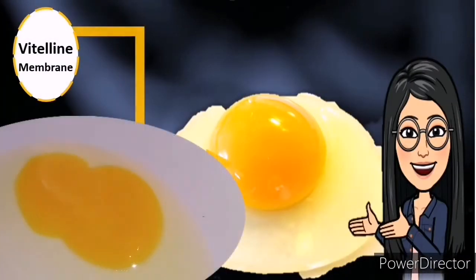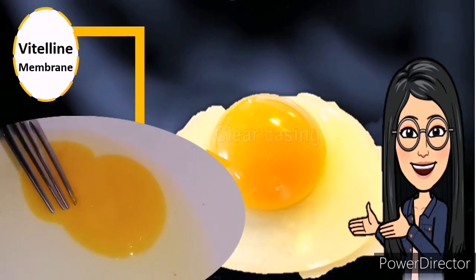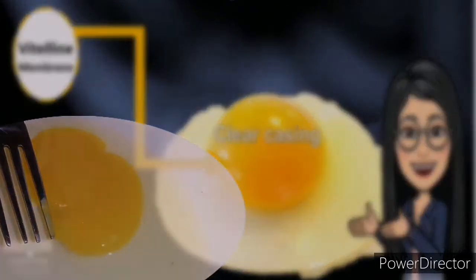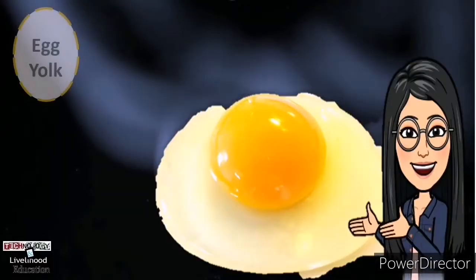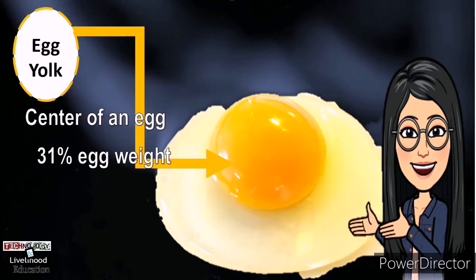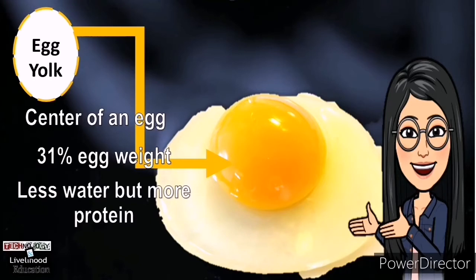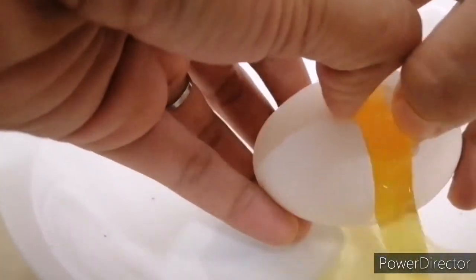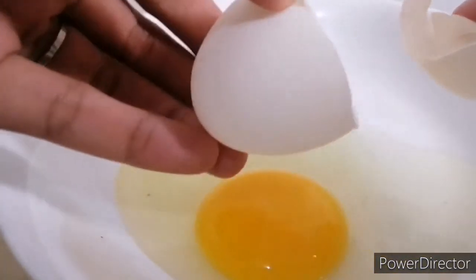Vitelline membrane — It is also called the clear casing because it protects and gives shape to the egg yolk. Egg yolk — The center of an egg. It is approximately 31% of the weight of the egg. It contains less water but more protein than the white. It also contains riboflavin, thiamine, and lecithin, which is an effective emulsifier. The color of the yolk depends on the food of the hen and the species or breed.